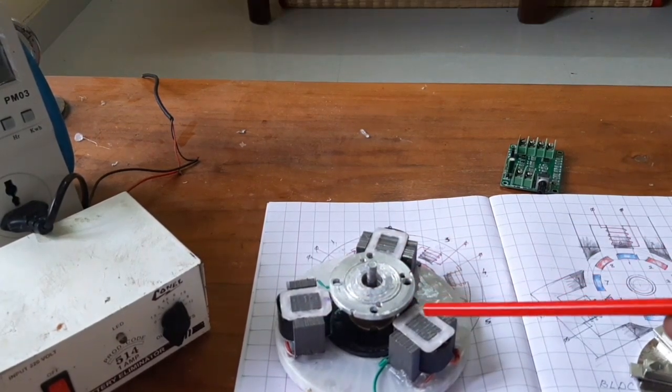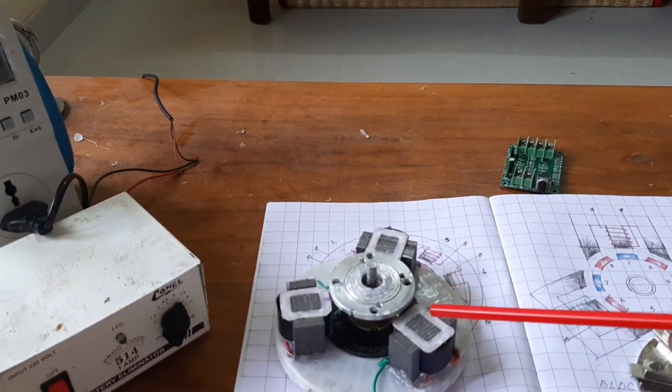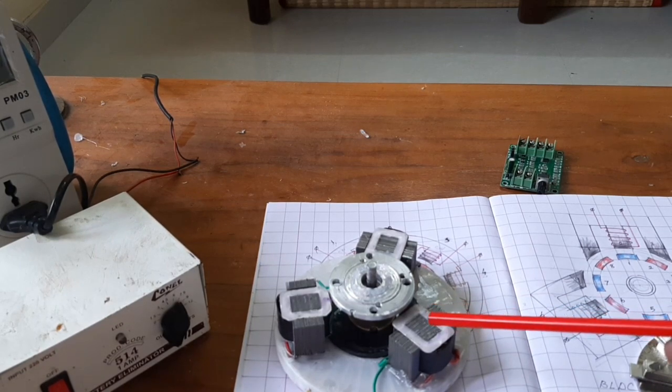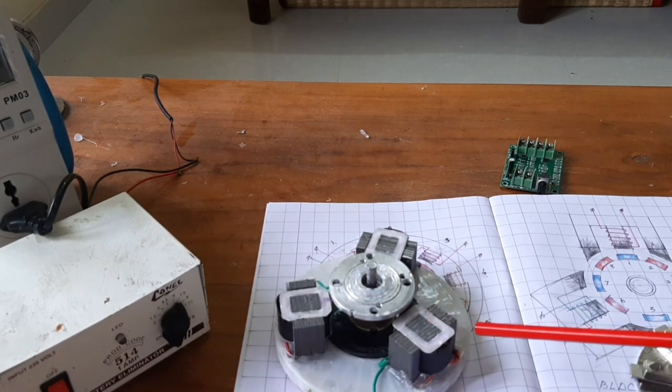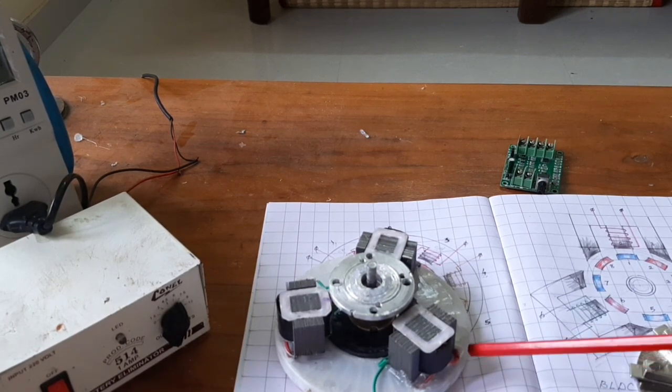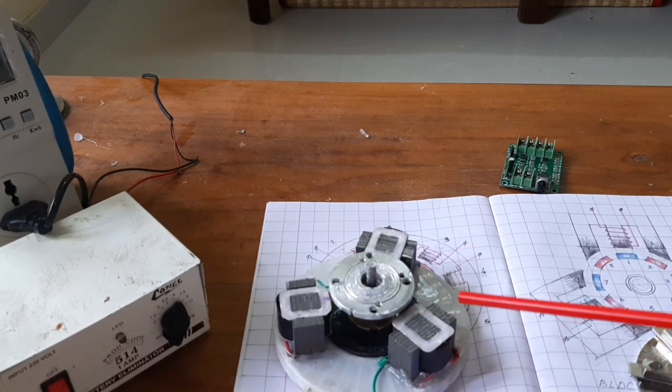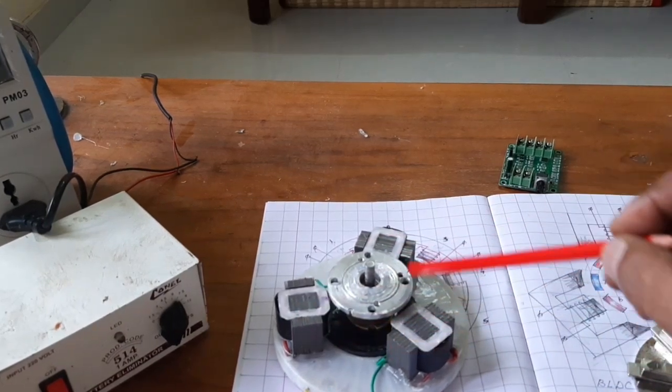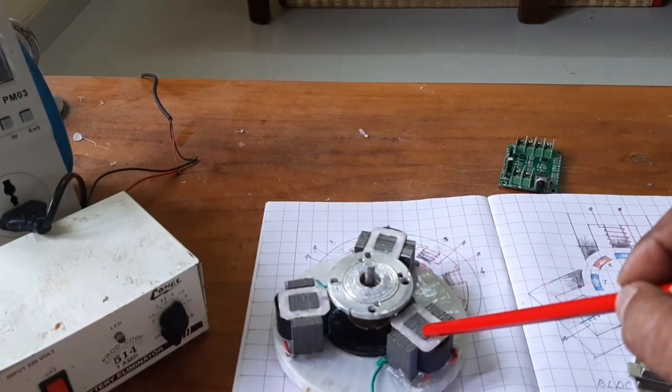In the transformer, 230 volt input with 6-0-6 output, that means 12 volt center-tap output. The secondary winding is now the stator winding. Three transformers at 120 degree phase, fixed at equal distance.